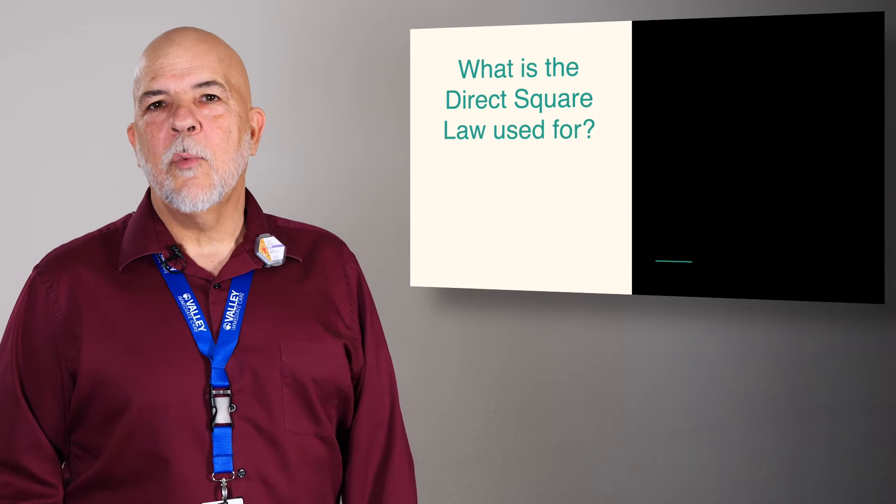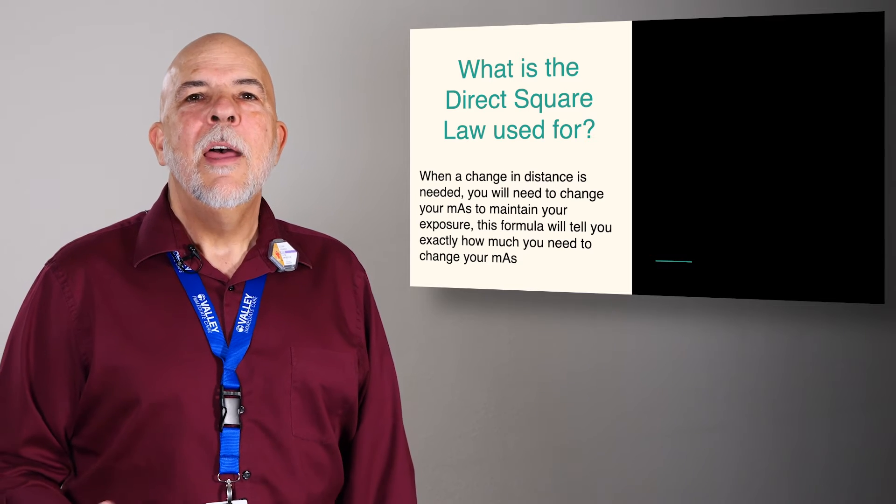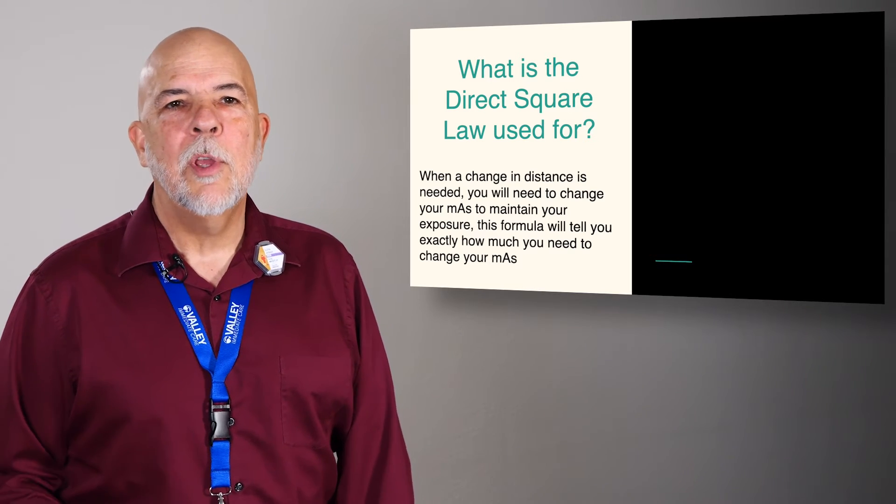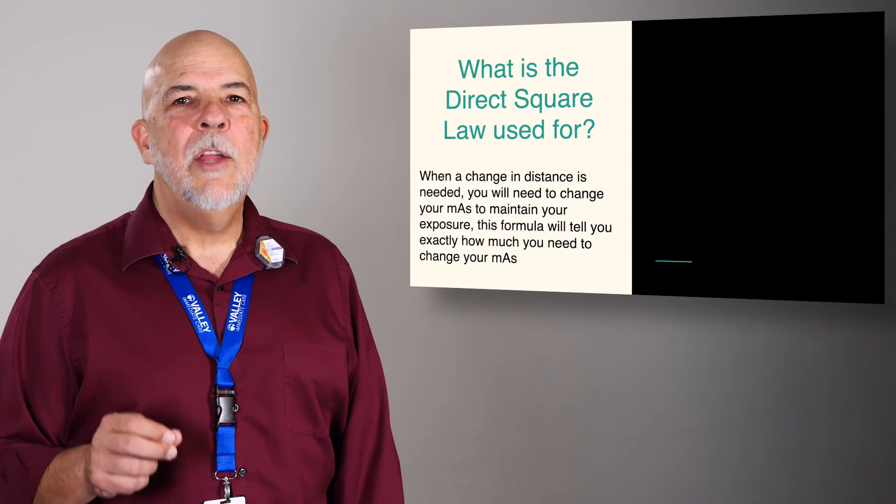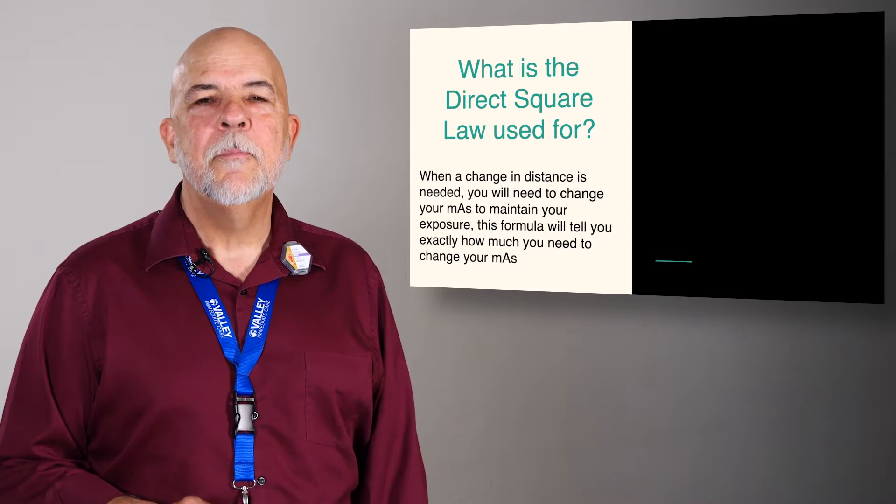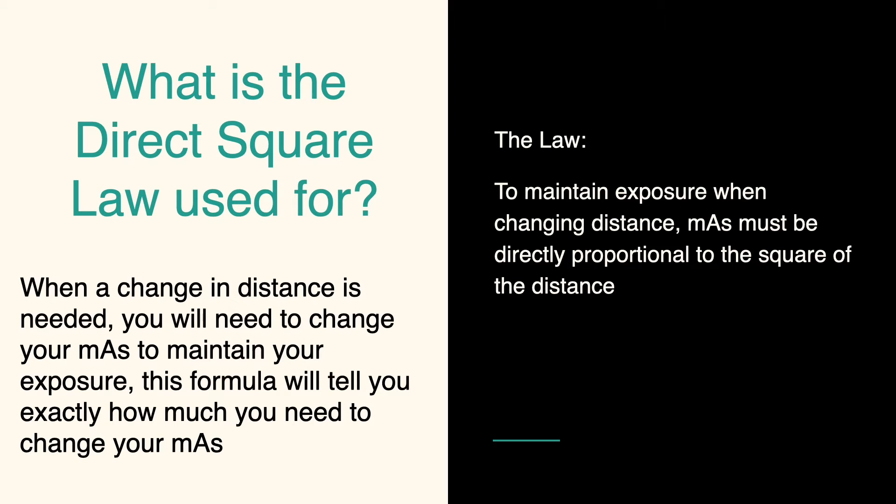So what is the direct square law used for? If you're changing distances for one reason or another, this can often be due to trauma or limited space in where you're working. This tells you how much you need to alter your mAs to maintain your exposure. The law states that to maintain exposure when changing distances, mAs must be directly proportional to the square of the distance.